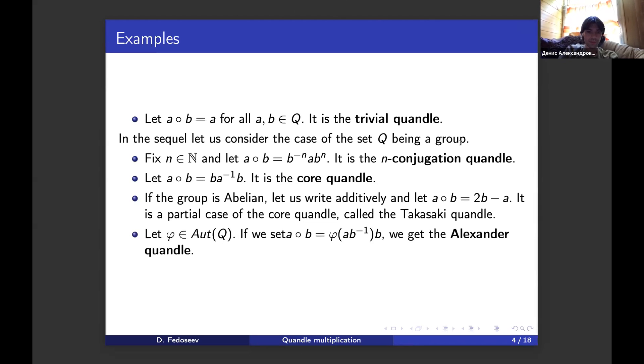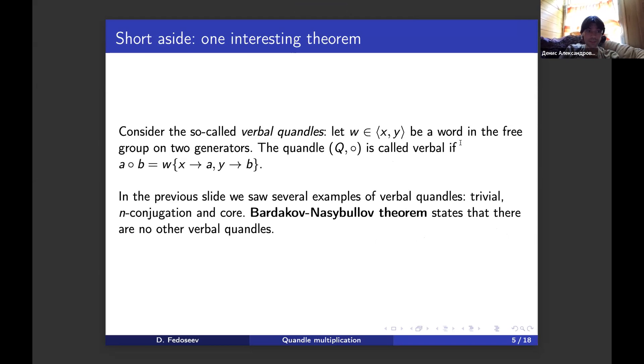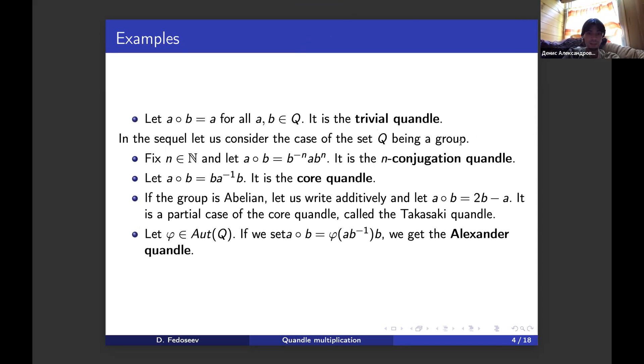Then we have the core quandel, where the operation is B A inverse B. In particular, if the group is abelian and we write the operation as addition, then taking the operation 2B minus A, we get a partial case of the core quandel, the well-known Takasaki quandel. Finally, the Alexander quandel: if we take phi to be an element of the automorphism group of Q, and we set the operation as written, then we get the Alexander quandel. One interesting structural theorem is about so-called verbal quandels.